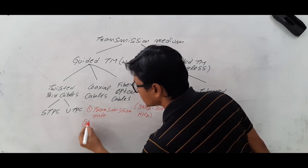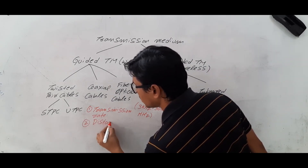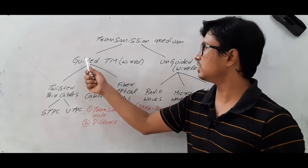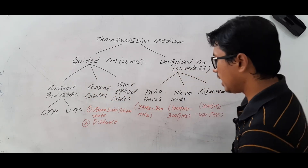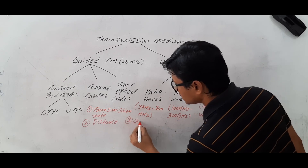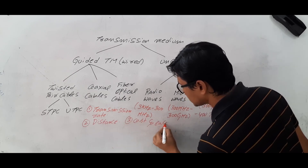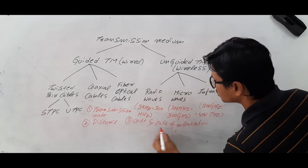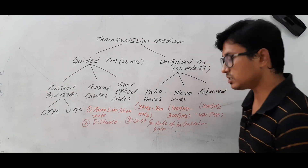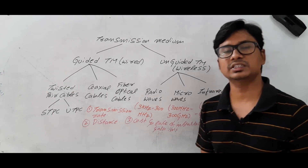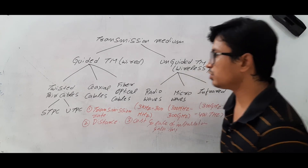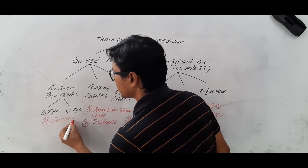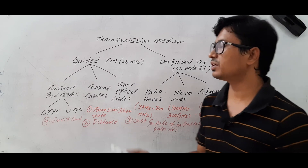Another important factor is the distance between the source and the destination, which plays a major role in selecting guided or unguided. Additionally, cost and ease of installation and maintenance are important. The fourth major factor is the environmental condition — the environment in which you want to deploy the transmission medium.